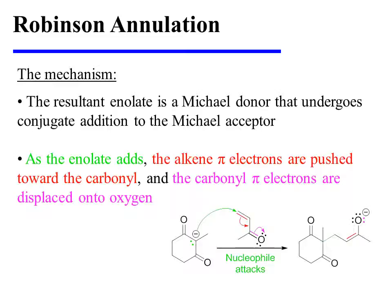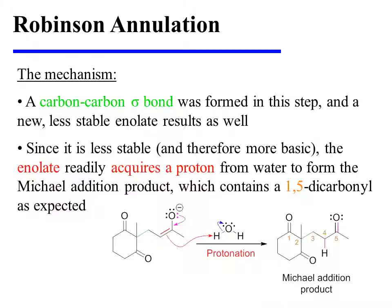As the enolate adds, the alkene pi electrons are pushed toward the carbonyl and the carbonyl pi electrons are displaced onto oxygen. A carbon-carbon sigma bond was formed in this step and a new, less stable enolate results as well. Since it is less stable and therefore more basic, the enolate readily acquires a proton from water to form the Michael addition product, which contains the 1,5-dicarbonyl as expected.